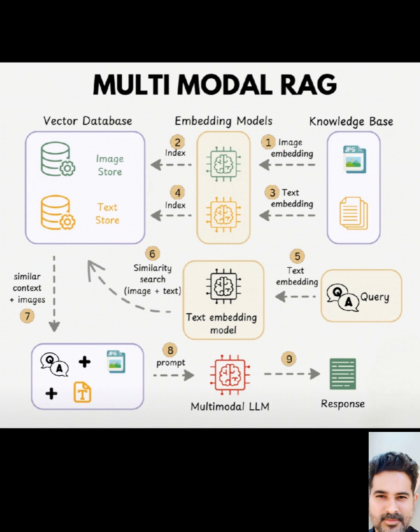We grab the actual images and text associated with those similar embeddings. This is the context your AI needs to answer your question. We combine your query and the retrieved context into a prompt. This prompt is fed into a multimodal large language model, or LLM. This LLM is special because it can understand both text and images. Finally, the multimodal LLM generates a response, answering your question based on the retrieved information.